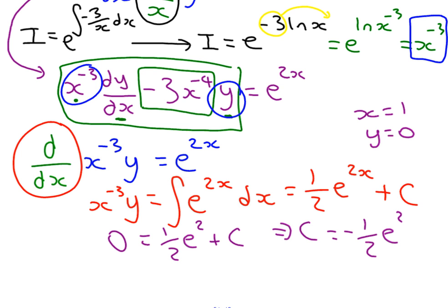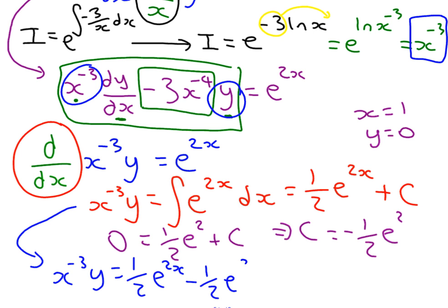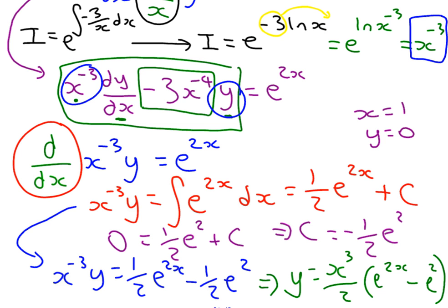We write out our equation again, replacing c with minus one half e squared: x to the minus 3 times y equals one half e to the 2x minus one half e squared. Finally, we multiply through by x cubed and factorize out the half, giving y equals x cubed over 2 times (e to the 2x minus e squared). I hope that has helped. Thank you for watching, and good luck in your maths work.